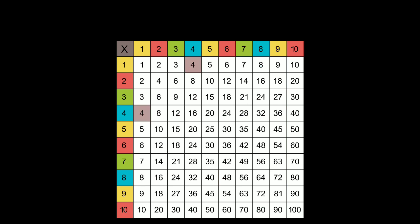Four, eight, twelve, sixteen, twenty, twenty-four, twenty-eight is what you see. Thirty-two, thirty-six, and forty. When multiplying by four, this is what you see.